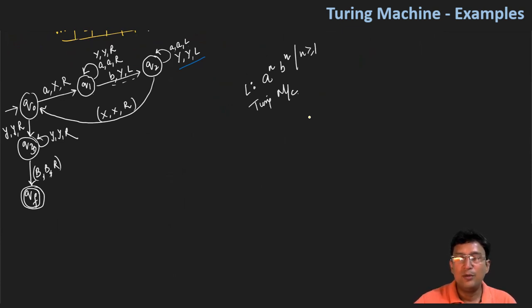So, a Turing machine is defined by 7 tuples.